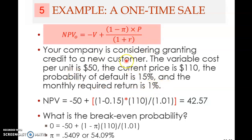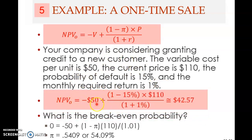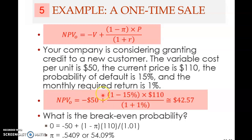Now simply apply the formula. The net present value is: −50 (the variable cost, cash outflow now) plus (1 − 15%) × $110 divided by (1 + 1%). The (1 − 15%) is the probability that the customer will pay, and if they pay, they pay $110. Dividing by (1 + 1%) gives the present value of that expected cash flow at the end of one month. So you get −$50 plus $42.57.